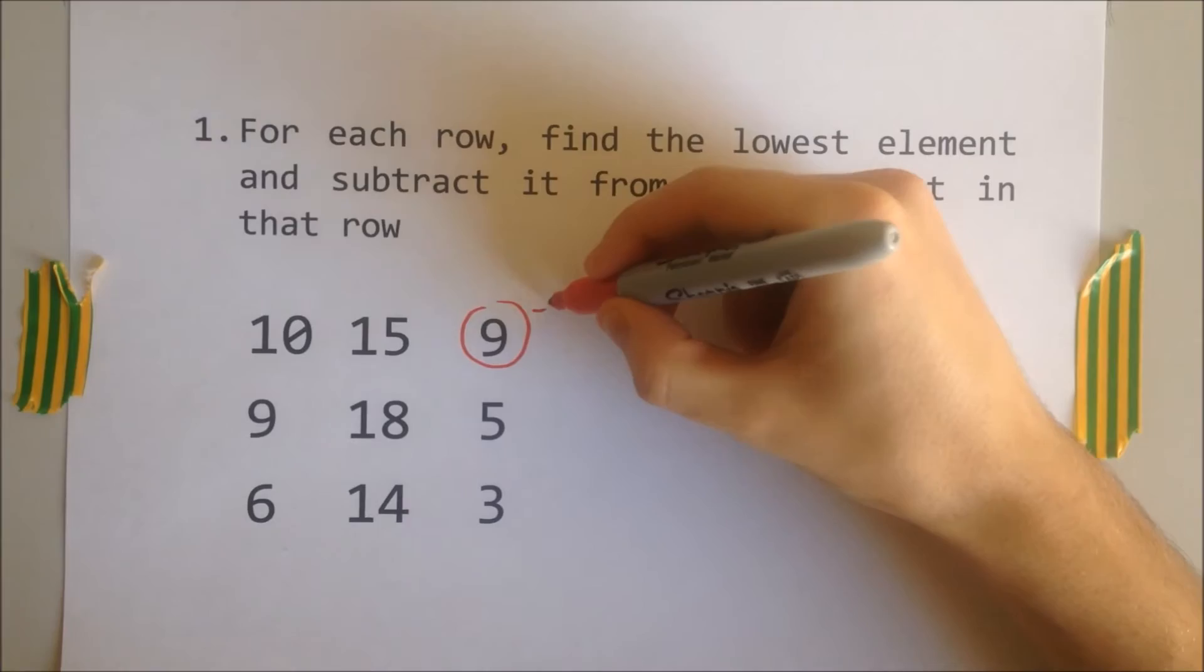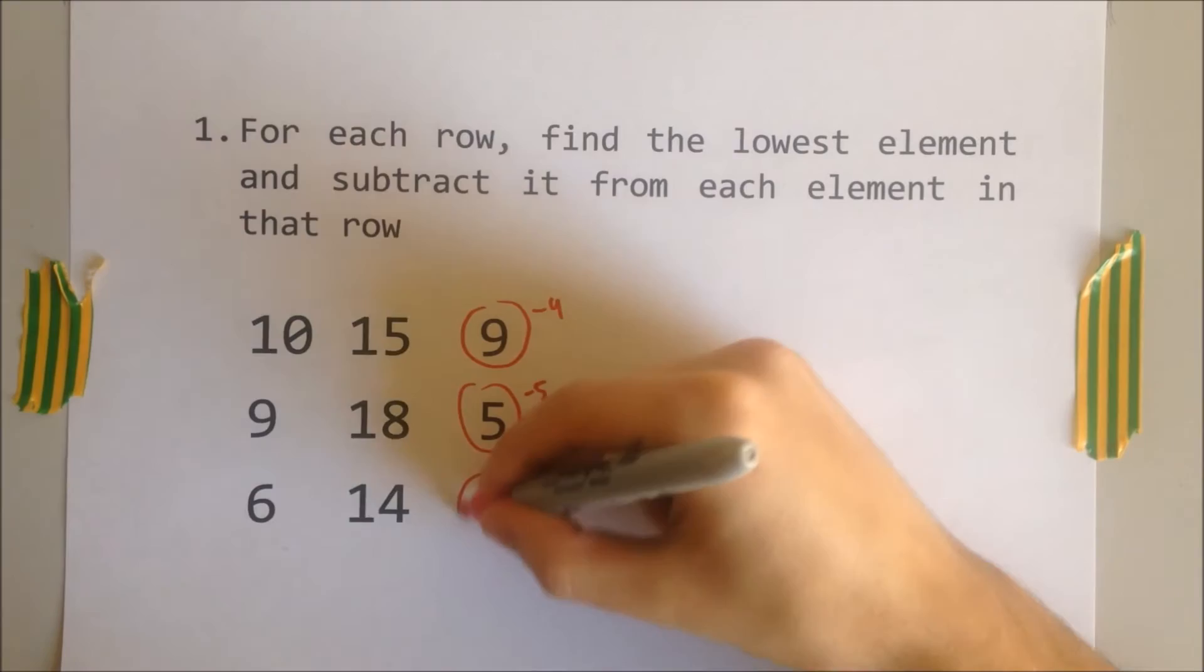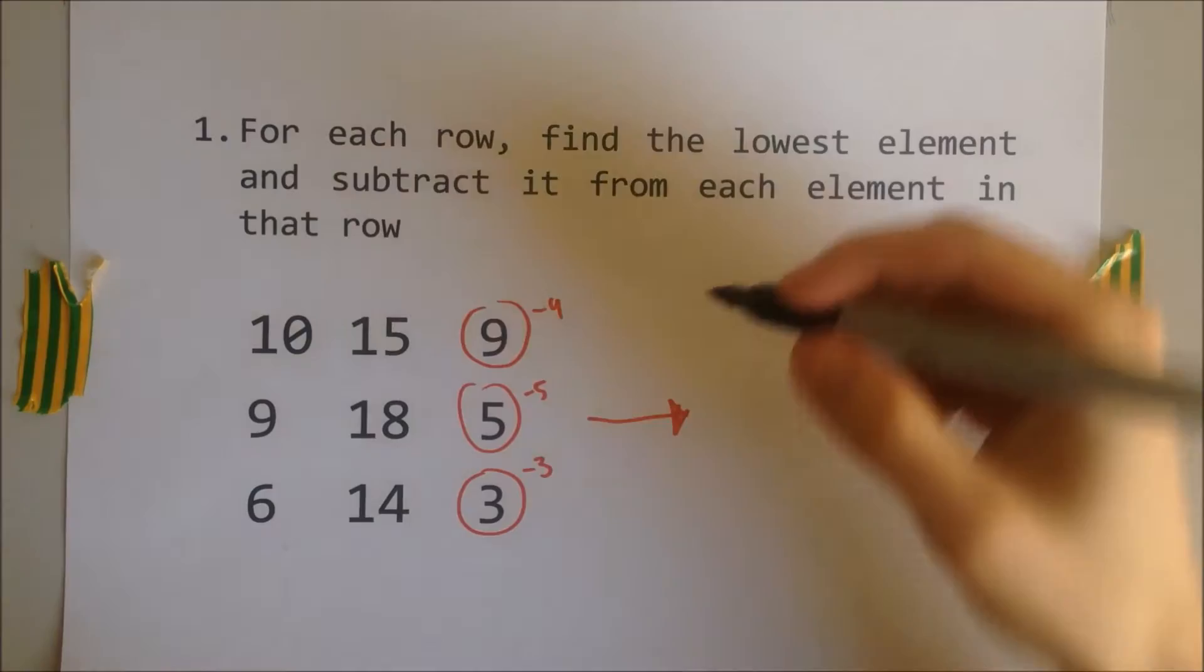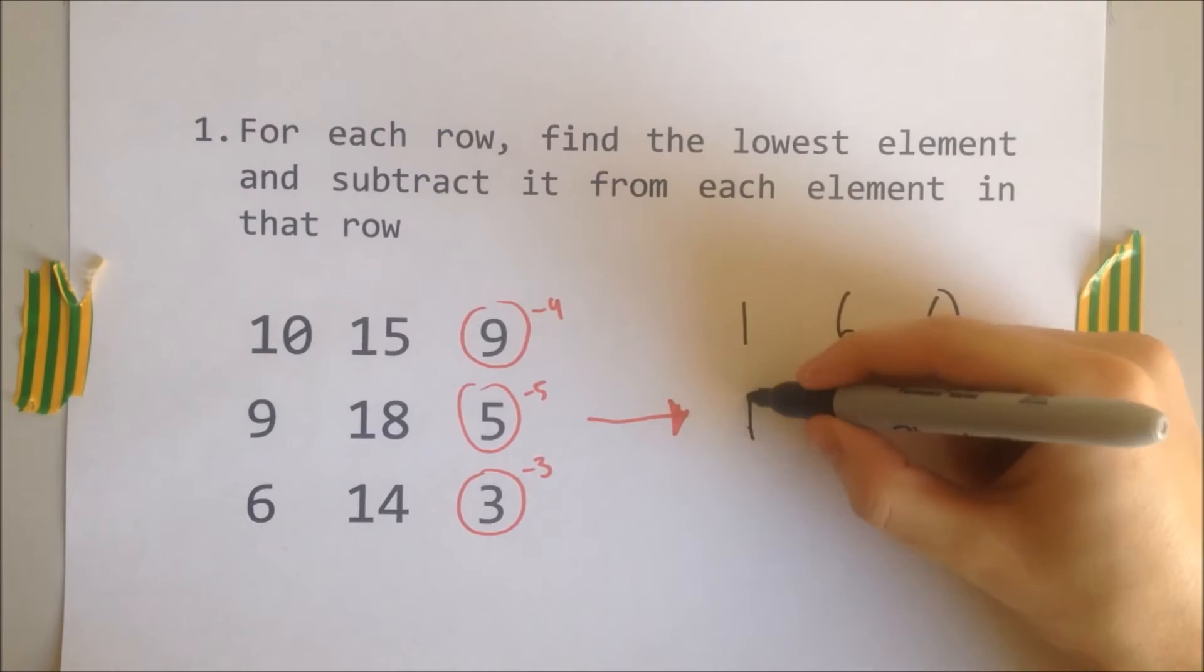Here we have our matrix that we want to solve. Step one, for each row, find the lowest element and subtract it from each element in that row. We start at the top and work our way down reducing. As you can see, the smallest element is 9 in that row, so we minus this from every other element.